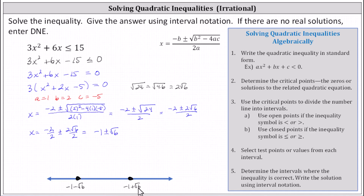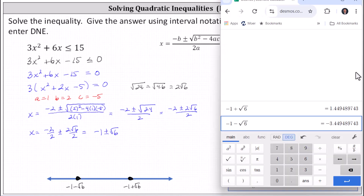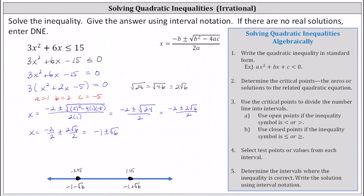The next step is to select test values in each of the intervals we've created. It might be helpful to get decimal approximations for these two irrational critical points. Negative one minus square root of six is approximately negative 3.45, and negative one plus square root of six is approximately 1.45. Let's select our test values.